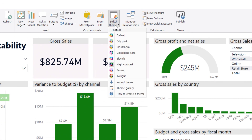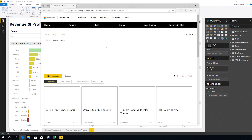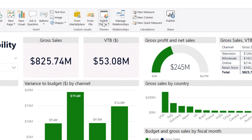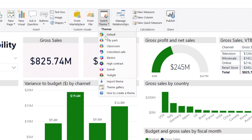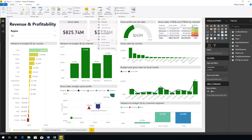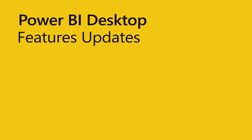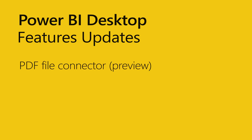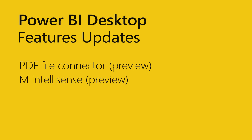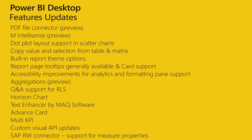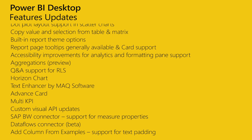You can also find a link to the report theme gallery in the same place, which contains community-developed themes. In addition, you will find help on creating your own theme if, for example, you want to create one based on your organization's branding. This update also includes a preview of a PDF file connector that lets you access table data in PDF files, a preview of IntelliSense support for the M language used by Power BI, and more. We provide links to everything you need to know in the transcript and resources guide.